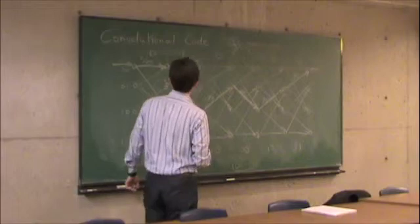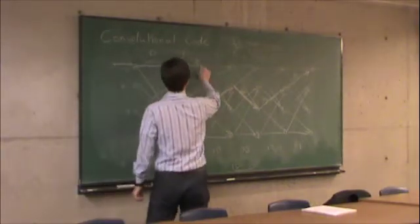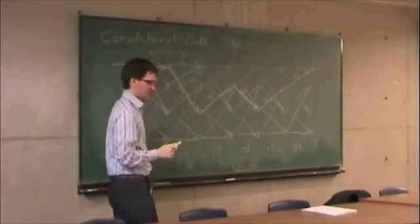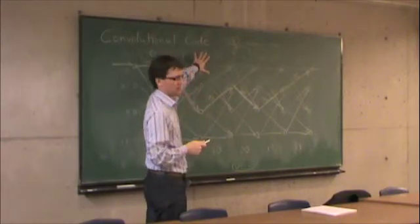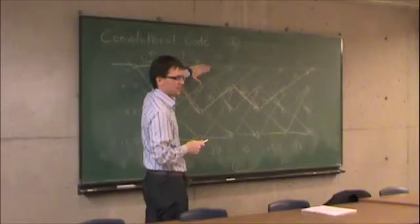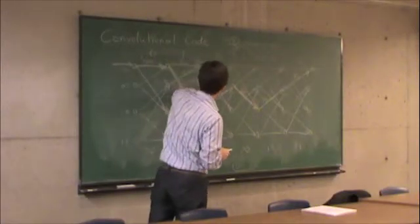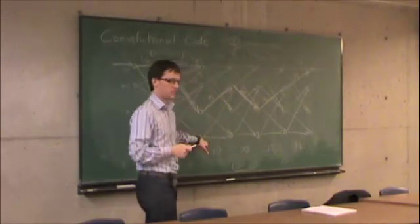So the idea is, into each state, at each time, into each state, you calculate all the possible costs of all the input paths, but you only need to keep the minimum. So in other words, for four states, you only need to keep four paths.